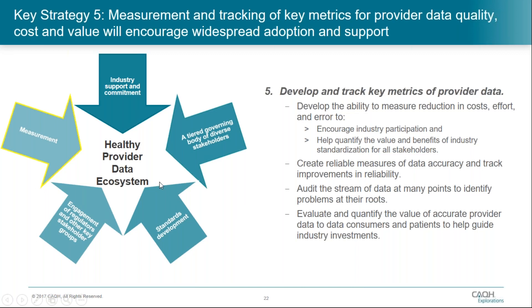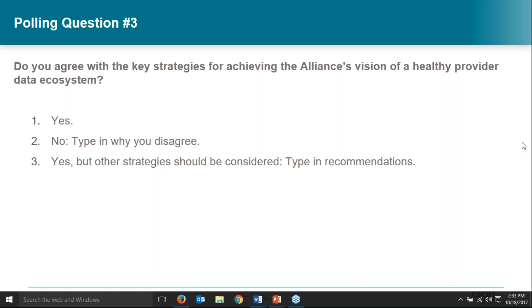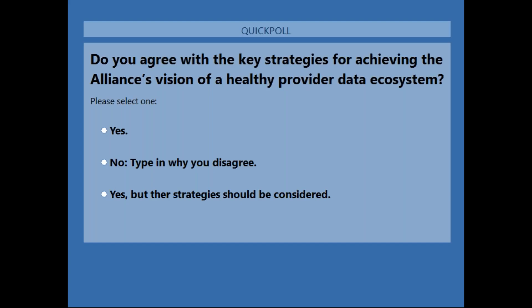For our next polling question, number three, this question asks: do you agree with the key strategies outlined by the Alliance for achieving a vision of a healthy provider data ecosystem? The choices are yes, no, and yes but other strategies should be considered. If you have any recommendations or want to comment, you can do so by typing into the comment box on your webinar panel. I'm going to launch the third polling question and leave it open for about 45 seconds to a minute for the audience response.